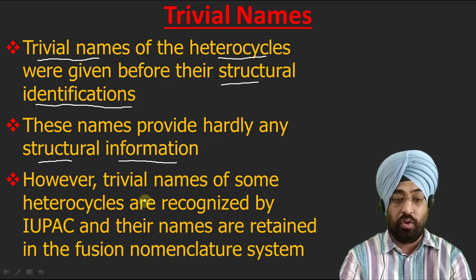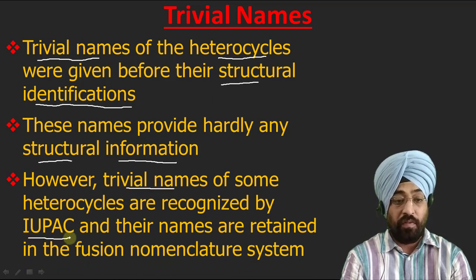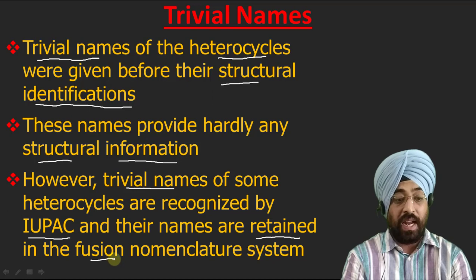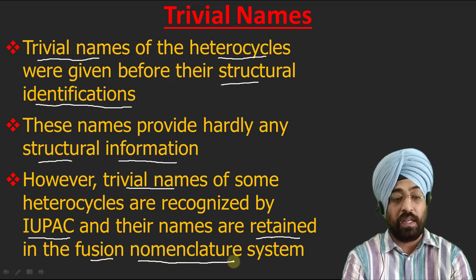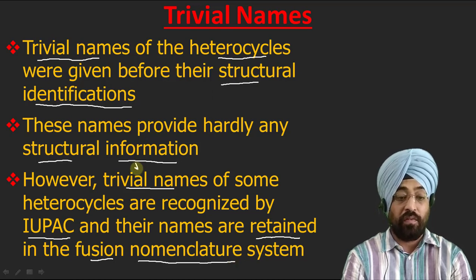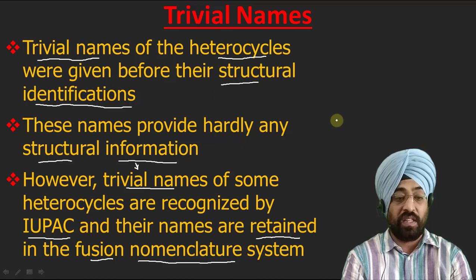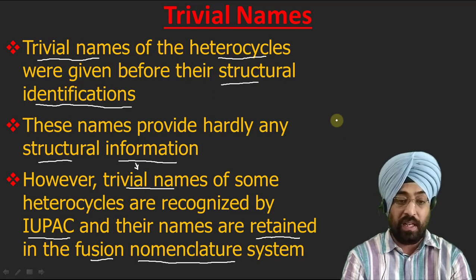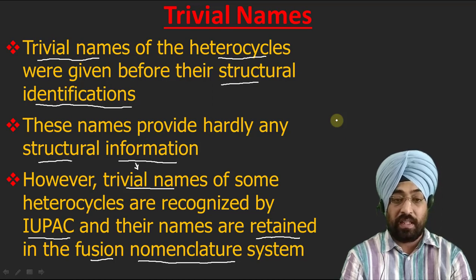However, these names are quite important and one should learn them, because some trivial names of some compounds have been recognized by IUPAC and their names are retained in the fused nomenclature. This is a second way by which we can name fused heterocycles, and we need the help of these trivial names because they have been retained by IUPAC. A typical example is phenol — phenol is not an IUPAC name but a common name, and now IUPAC has accepted it, so that name is more popular.